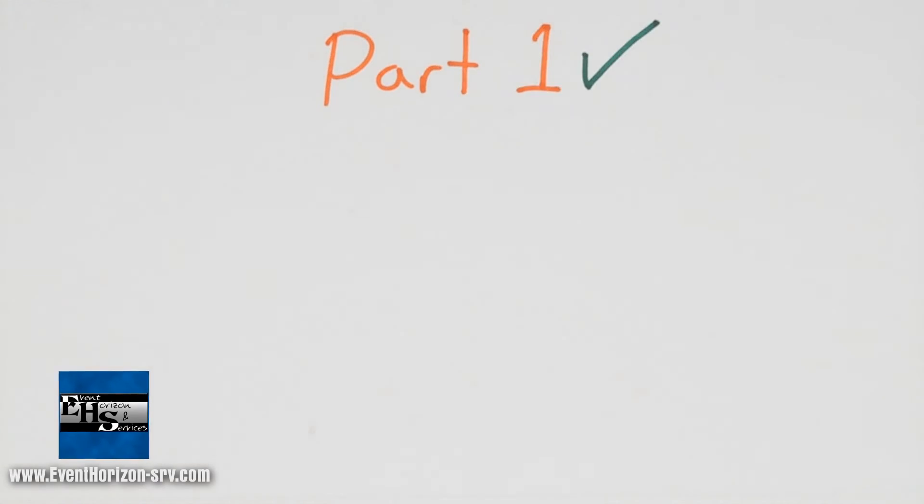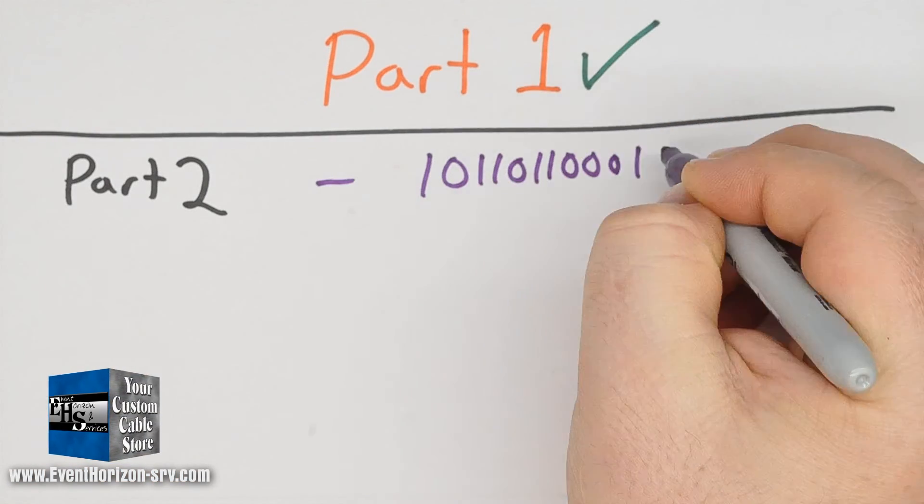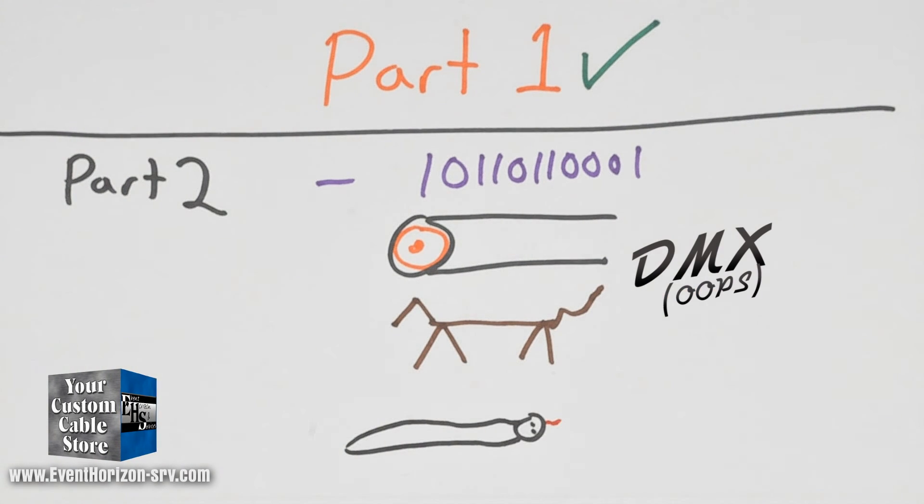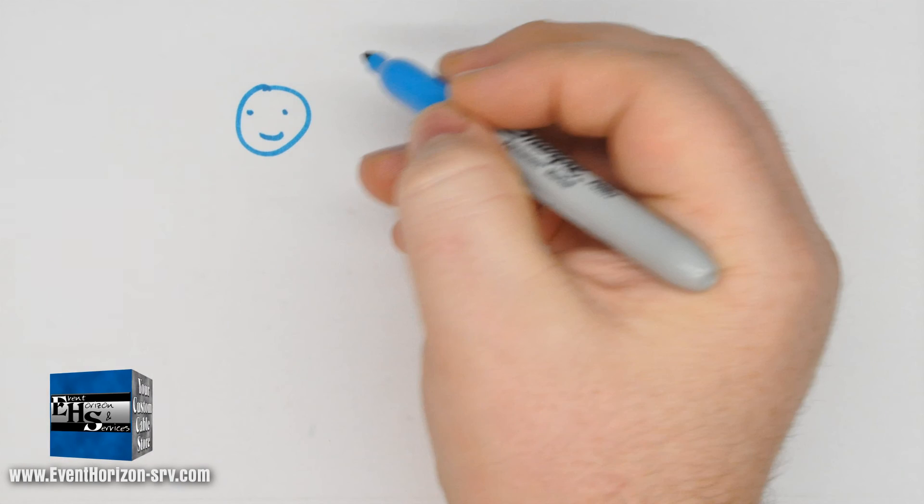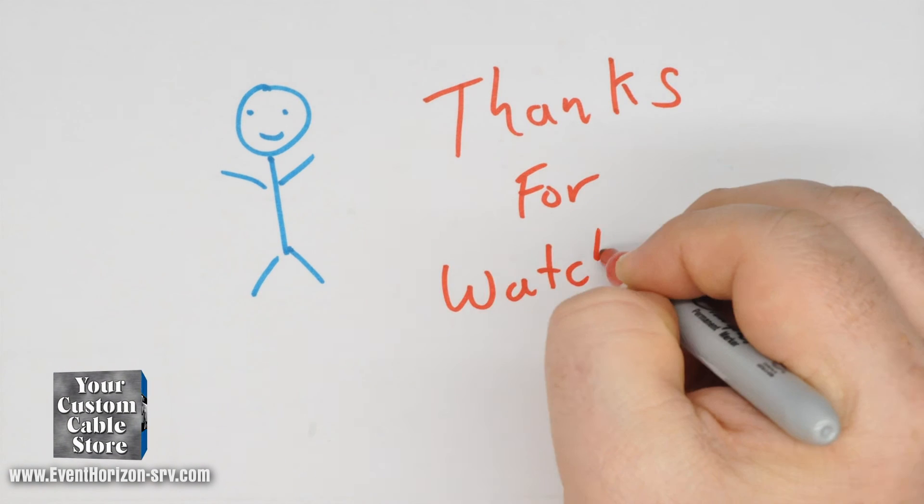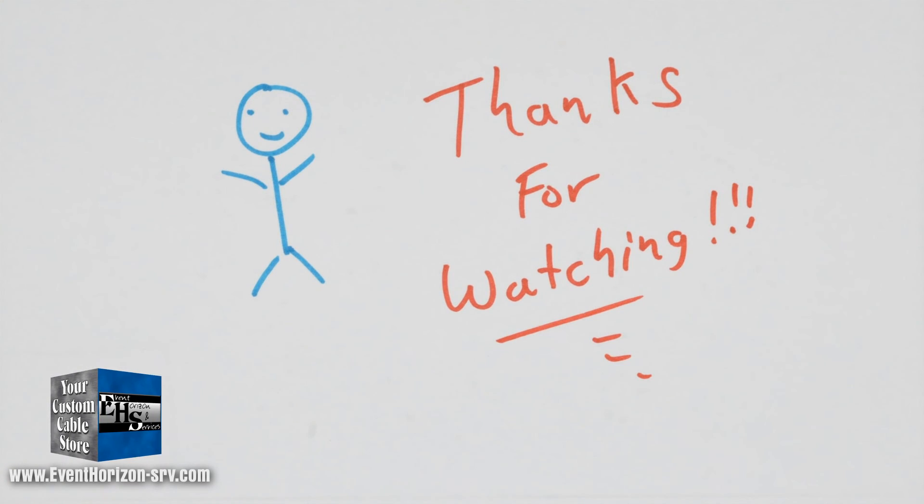This concludes part one. Next time we'll look at digital, coax, DMX, cat, and snake cables. I hope you found this video useful. If you have any comments, please leave them below or email us. Remember to like and share and look for upcoming videos. Thanks.